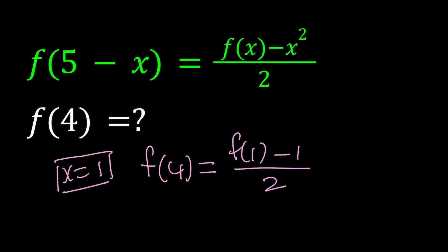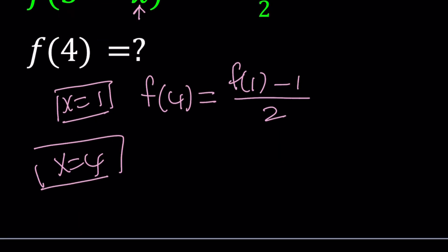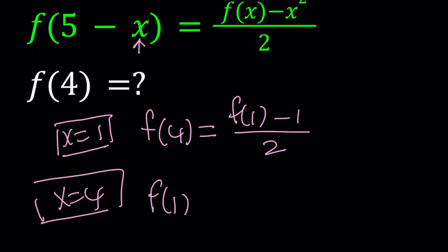How do I find an equation that contains f of 1? If you look at the original problem, it makes sense if you replace x with 4 now. So if we do that, we're going to get f of 1 equals f of 4 minus 4 squared, which is 16, divided by 2.